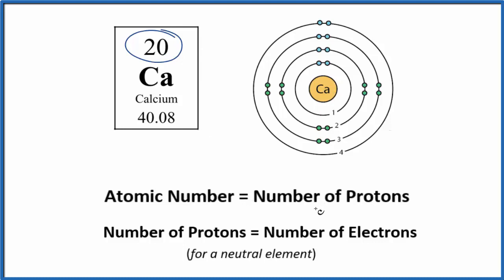The atomic number, the number of protons, also equals the number of electrons for a neutral element. All the elements on the periodic table are listed as neutral elements. So we also have 20 electrons, and they're distributed in these energy levels here around the calcium nucleus.